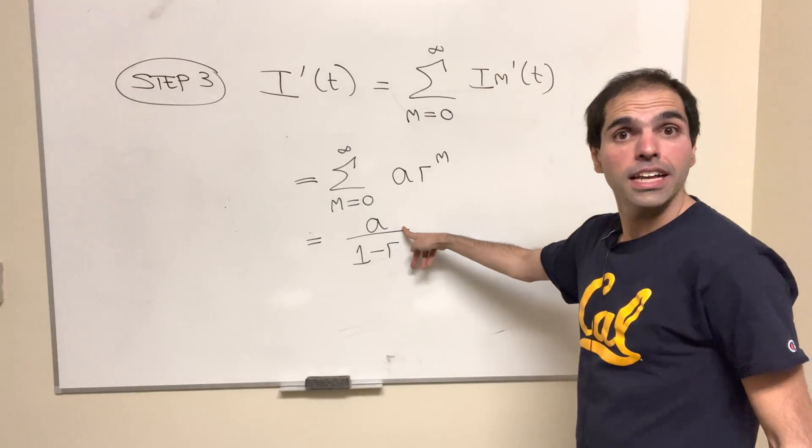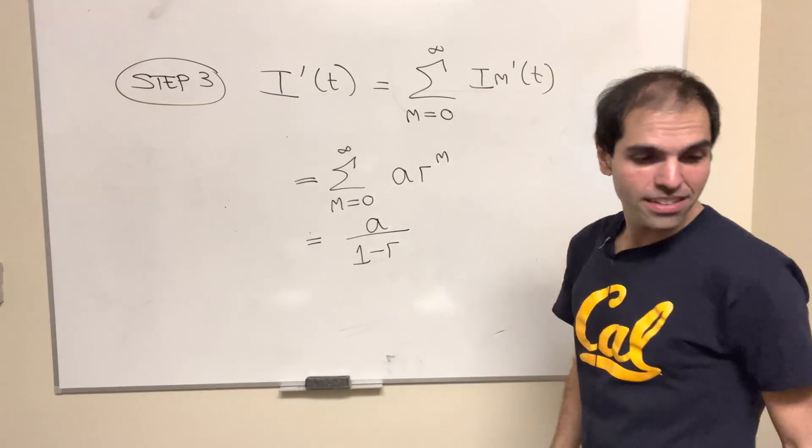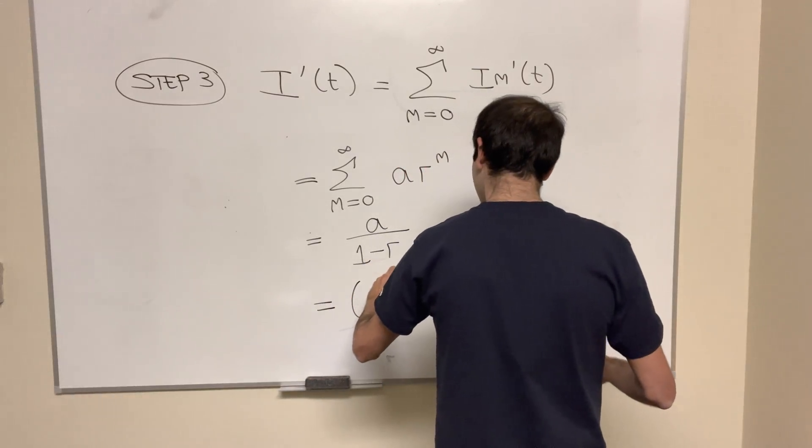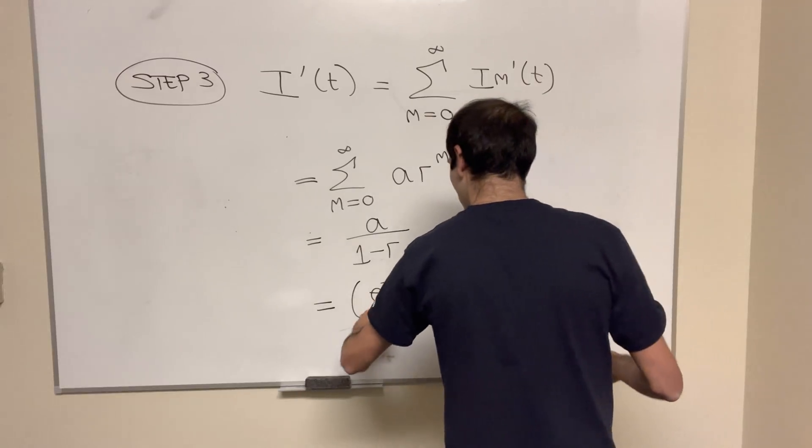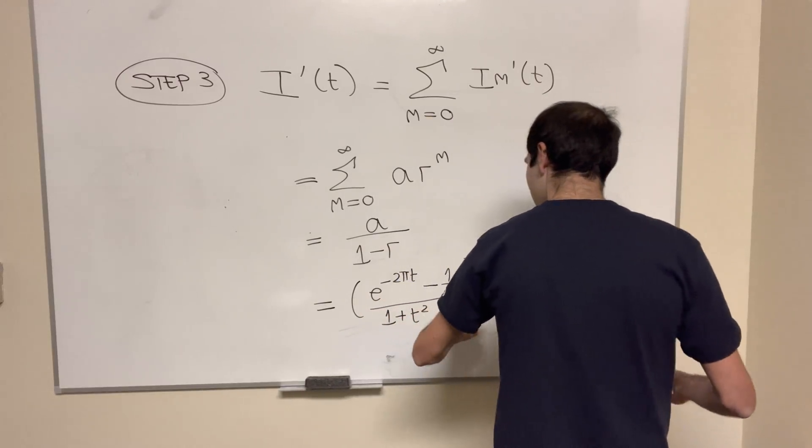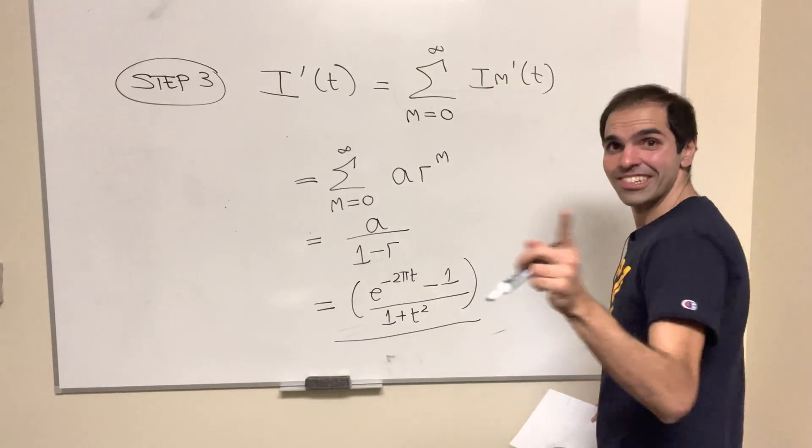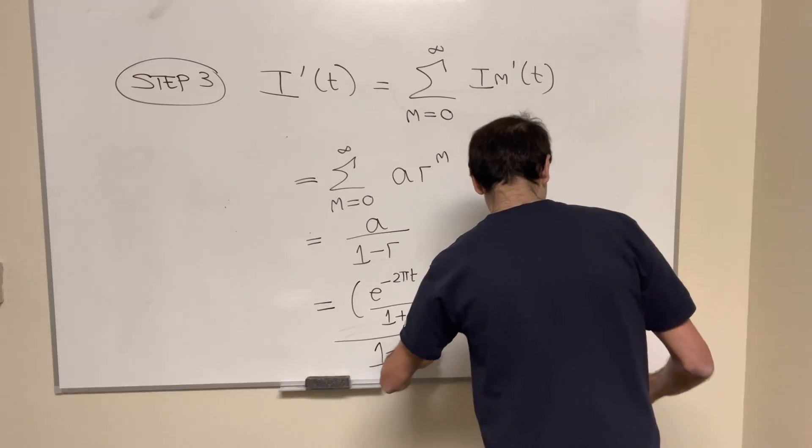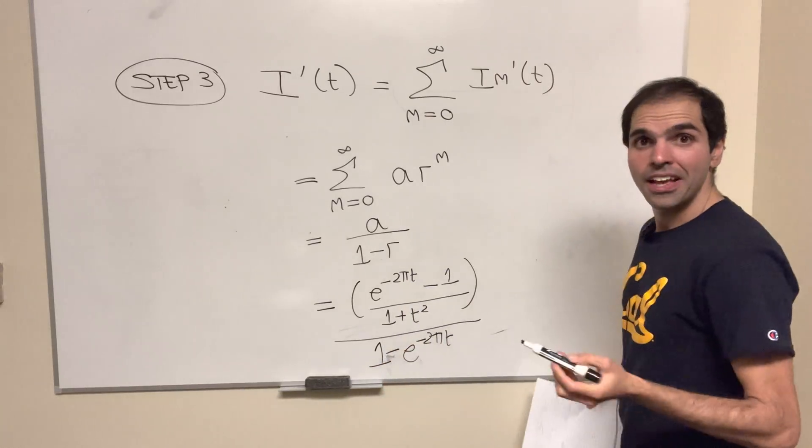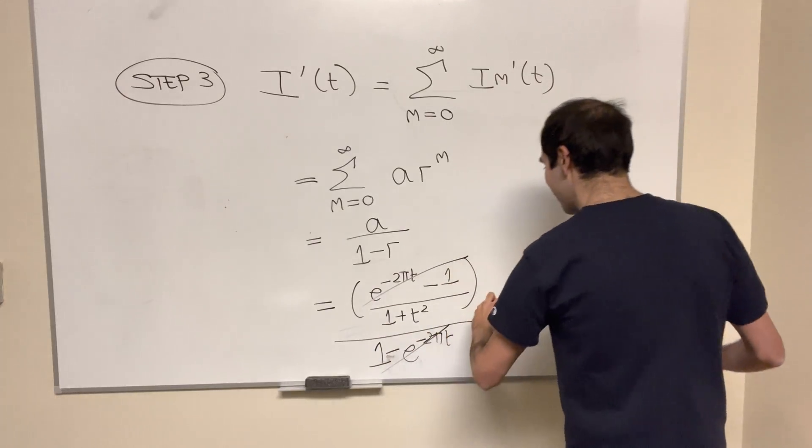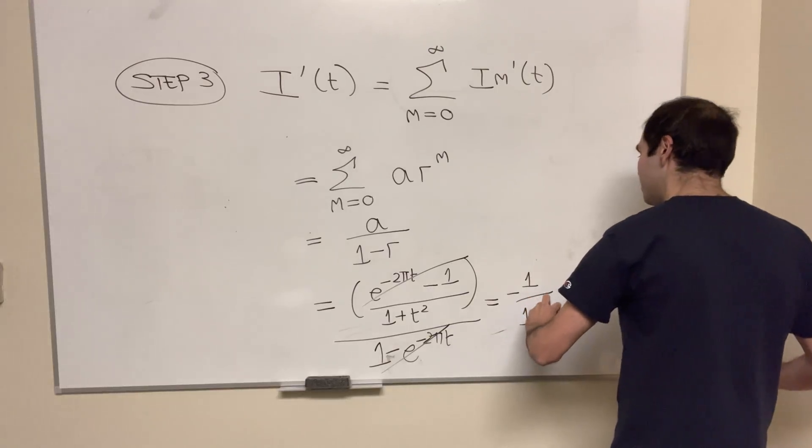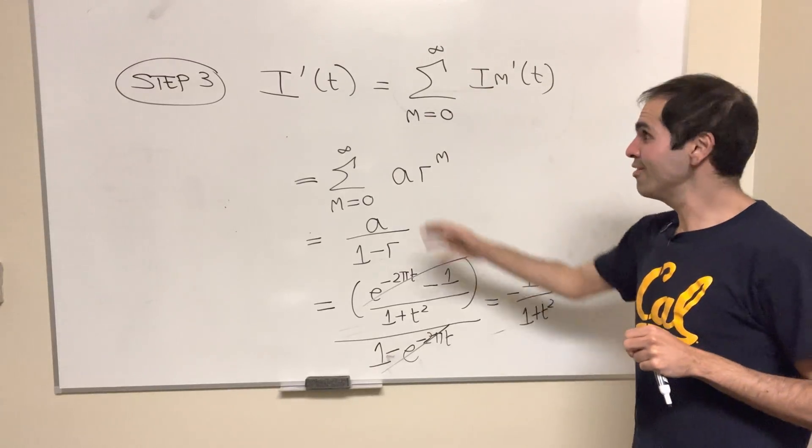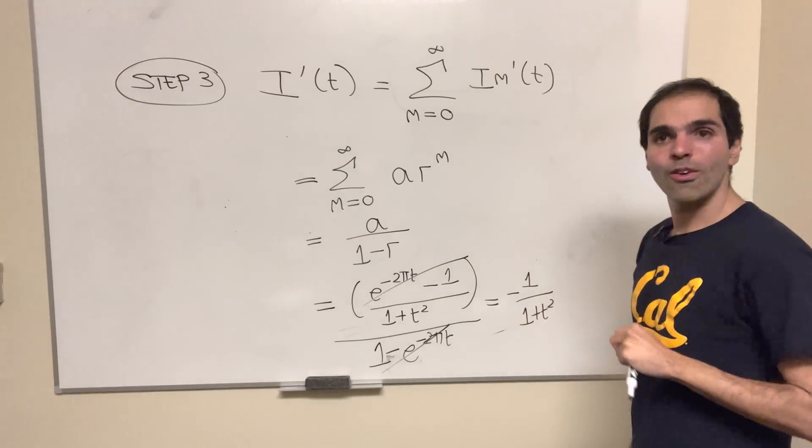Okay, and now we just need to calculate, you know, recall what a is and what r is, so in particular, what we get is, this becomes (e^(-2πt) - 1)/(1 + t²), and here's a cool thing, so another miracle here, so a miracle inside a miracle, this also becomes 1 - e^(-2πt), and guess what, this horrible term just cancels out, and we're left with -1/(1 + t²), and so the derivative of our generalized Fresnel function is just -1/(1 + t²).